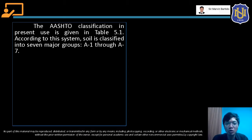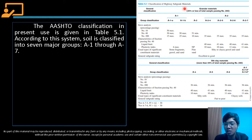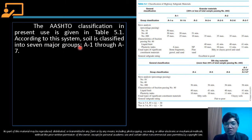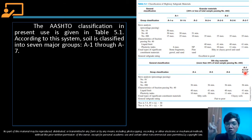The AASHTO classification currently in use is given in Table 5.1. This classification system is used for highway subgrade materials — for roads and pavements. According to this system, soil is classified into 7 major groups: A1 through A7. Some groups have subgroups: A1 has A1A and A1B; A2 has A2-4, A2-5, A2-6, and A2-7; and A7 has A7-5 and A7-6. These 7 major groups can be divided into two: granular materials (A1, A2, A3) and silt-clay materials (A4, A5, A6, A7).